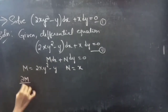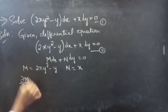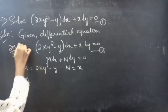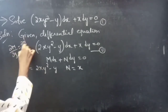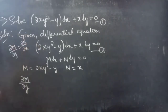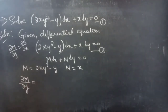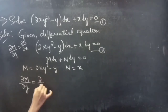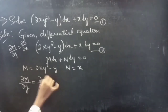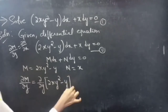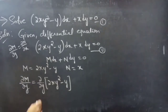We know that if ∂M/∂y equals ∂N/∂x, then the given differential equation is an exact equation. So firstly let's find the partial derivative of M with respect to y. It's always good to check whether the given equation is exact or not.